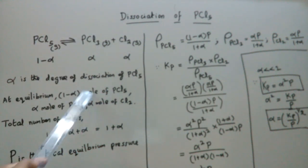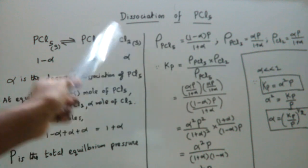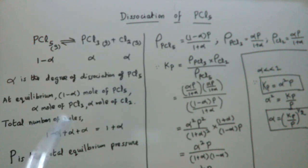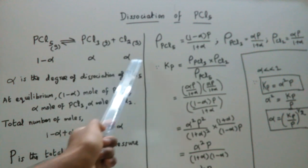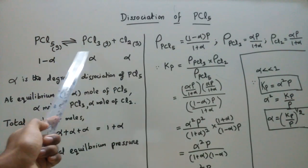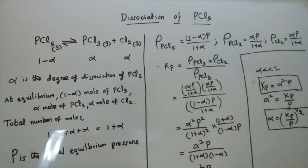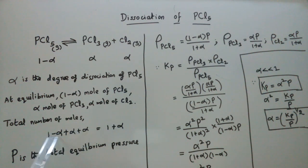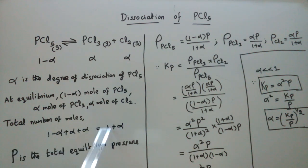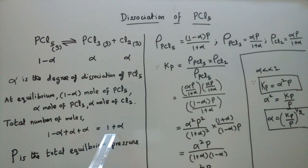The total number of moles is obtained by adding: 1 minus alpha plus alpha plus alpha. The minus alpha and plus alpha cancel, giving us a total of 1 plus alpha moles. Here P is the total equilibrium pressure.